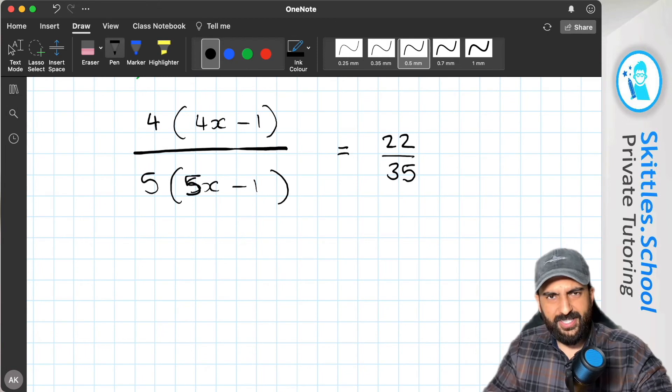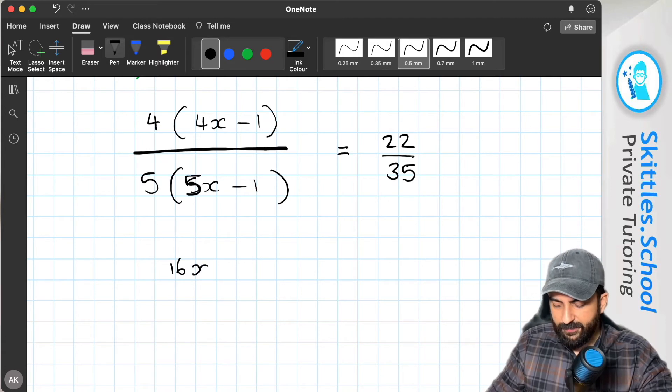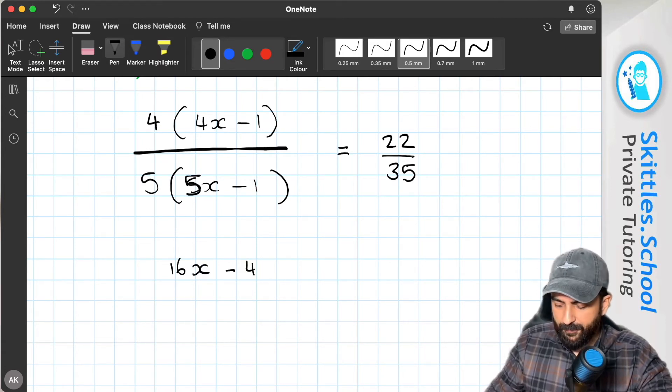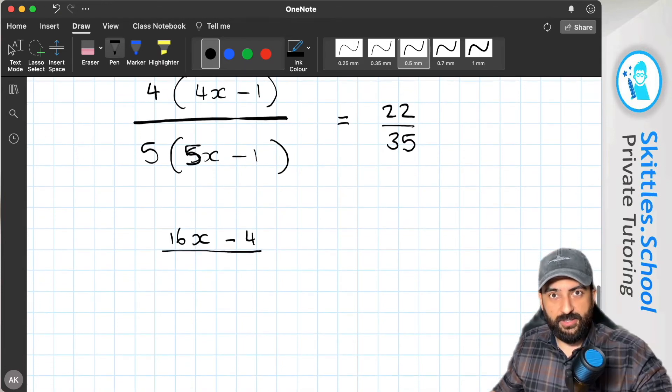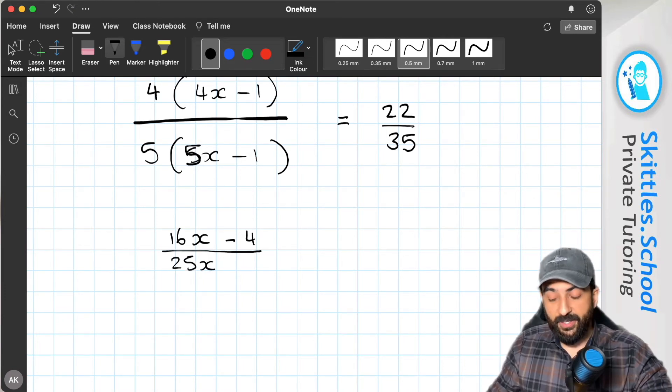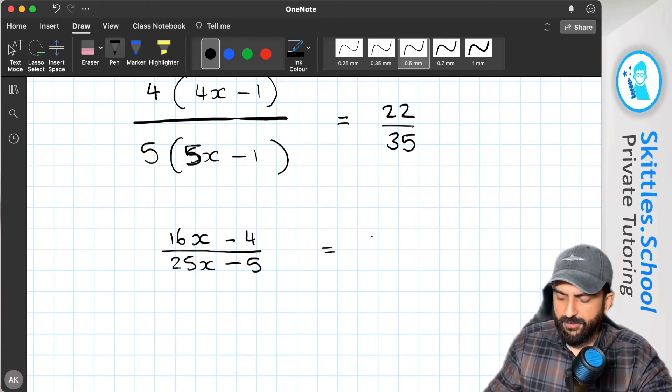Okay, let's expand these. So 4 times 4x is 16x. 4 times minus 1 is minus 4. 5 times 5x is 25x. And 5 times minus 1 is minus 5. And again, we still have the 22 over 35.